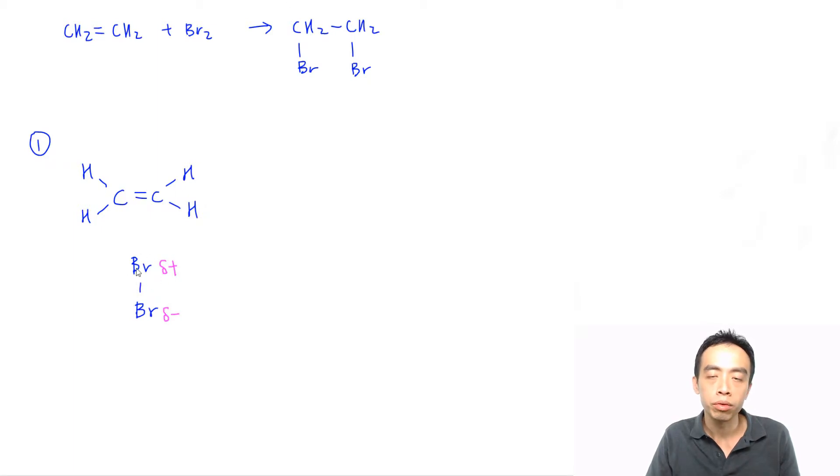Then my Br, which is delta positively charged, will be my electrophile. So in terms of arrow pushing, what we can do is I draw an arrow from my pi bond between my carbon and my carbon, and draw an arrow, I point towards this bromine. So what this means is one of this carbon will use two electrons inside the pi bond, form a bond with this bromine, which is delta plus.